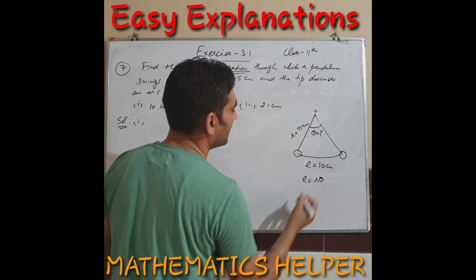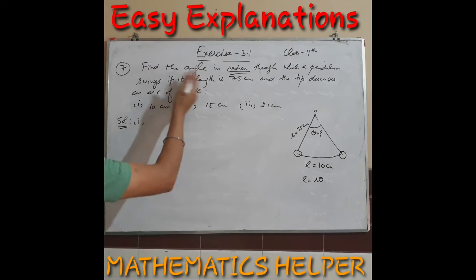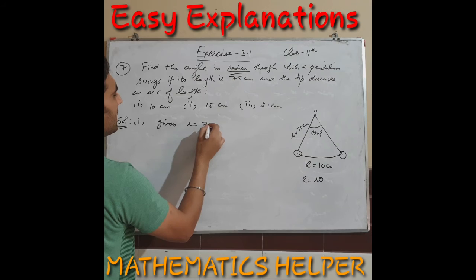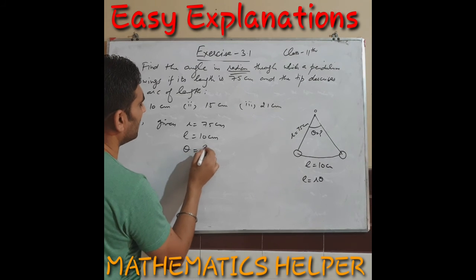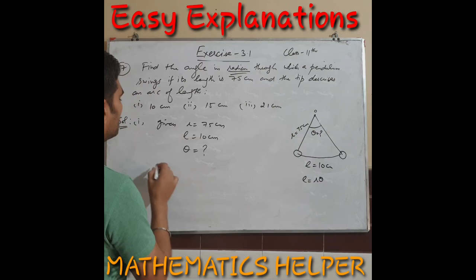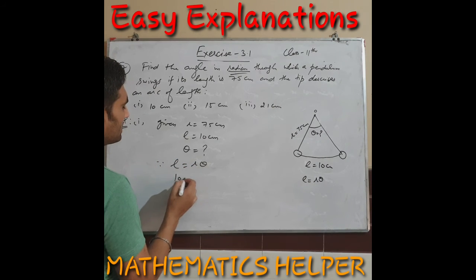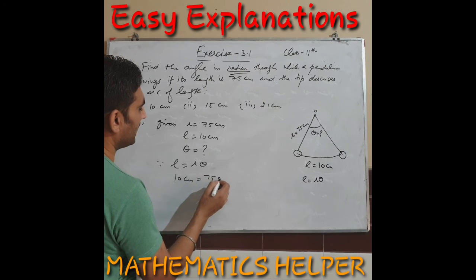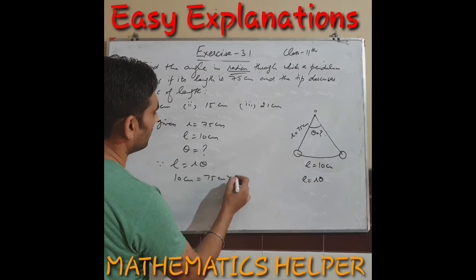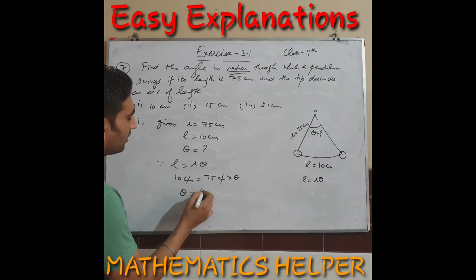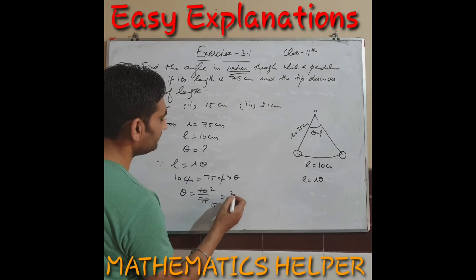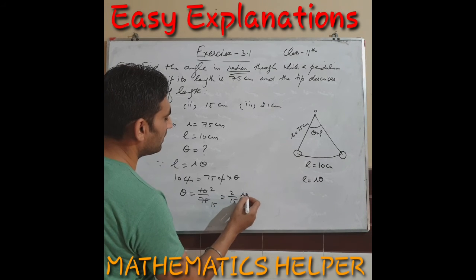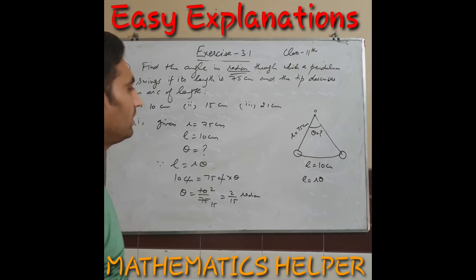Part one: l = 10 cm, r = 75 cm. Using l = rθ: 10 = 75 × θ. Cancelling centimeters: θ = 10/75 = 2/15 radians. This is the answer to part one.